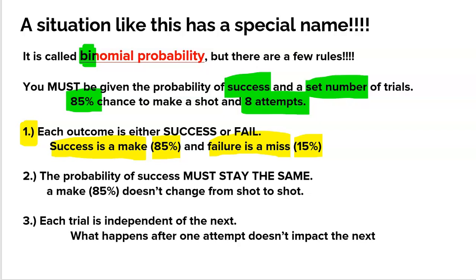The next rule is that the probability of success must stay the same. In our particular problem, that's the 85% chance of making a free throw — that value cannot change. The third rule is that each trial must be independent of the next. Meaning what happens on her first shot, whether she makes it or misses it, cannot affect what happens on the second, third, fourth, or any subsequent shot. In basketball, everybody's heard of a hot streak — that cannot be true here because we need the trials to stay independent. As long as you have a probability of success and a set number of trials and meet these three rules, you're in a binomial situation.